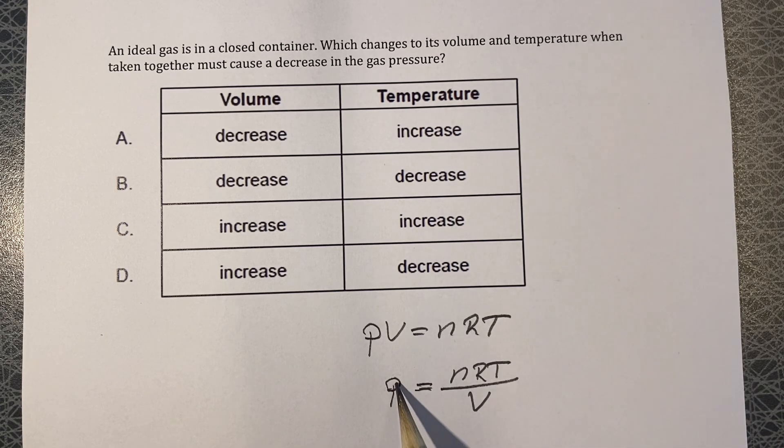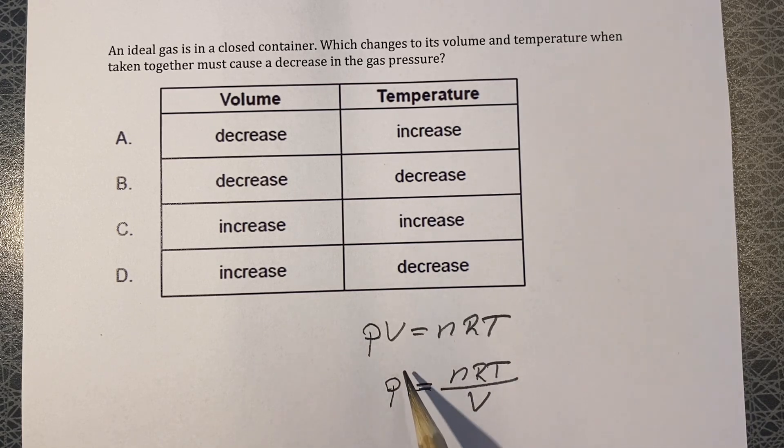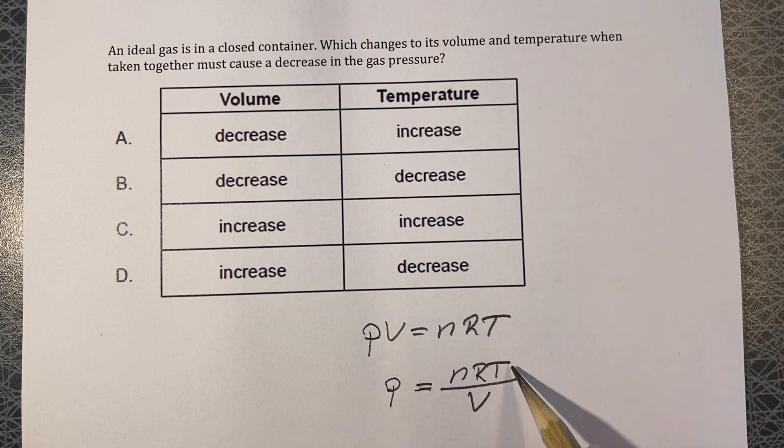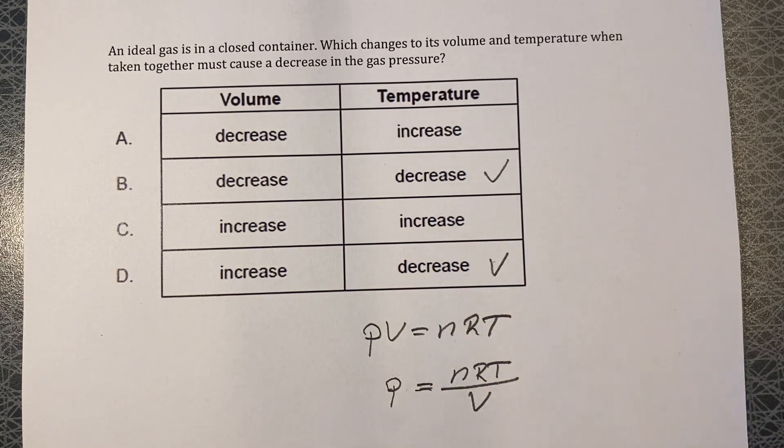If this goes down, then temperature goes down. If you want the pressure to go down, you can do that by decreasing the temperature. So decrease of temperature is correct.